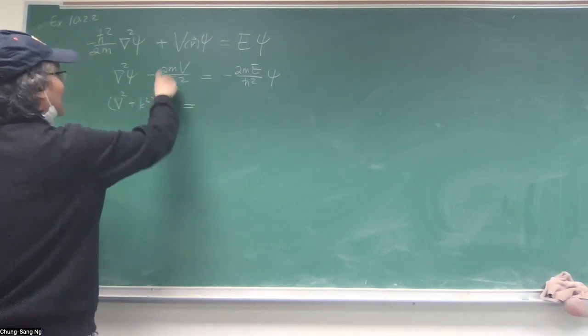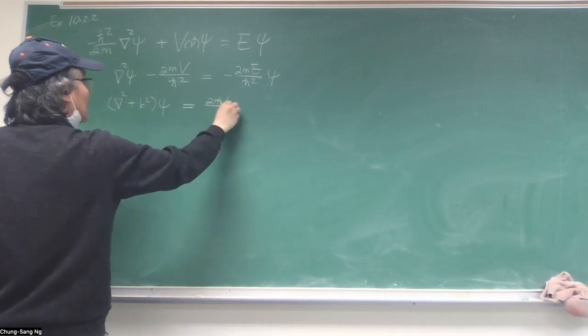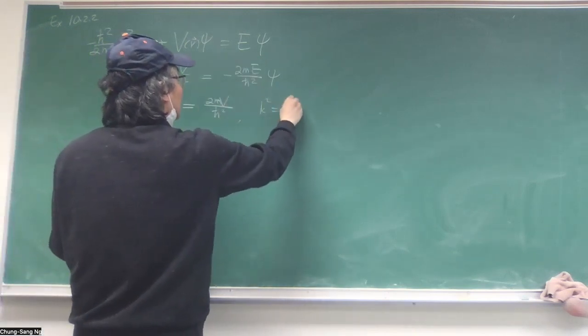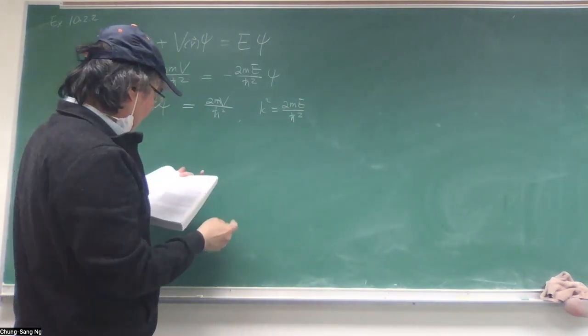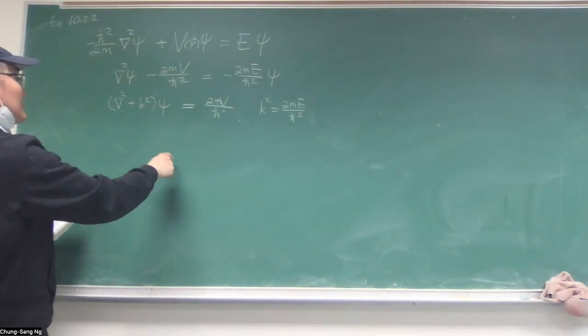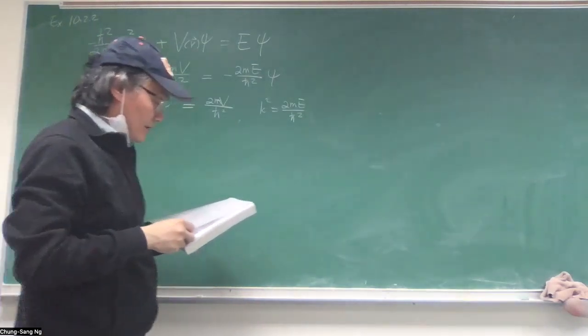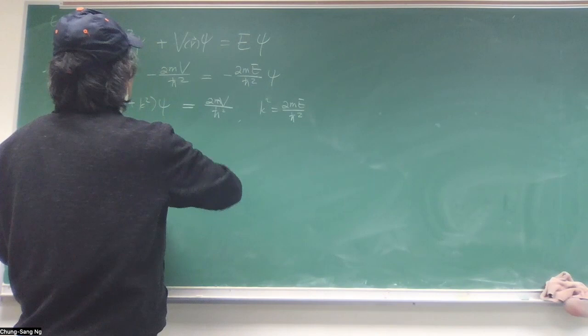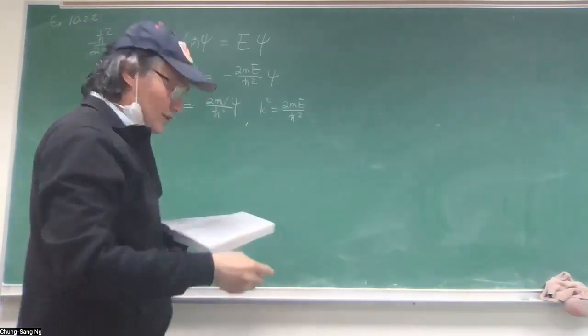Now, move that to the left-hand side. This becomes Laplacian plus k-squared psi equals 2m over h-bar squared V of x psi. This thing is non-zero. And the right-hand side is zero, this is the Helmholtz equation.